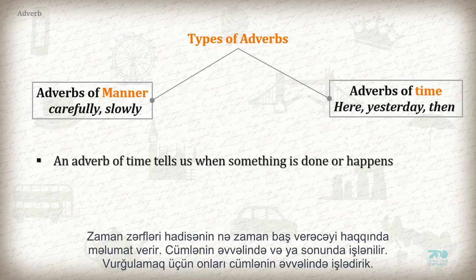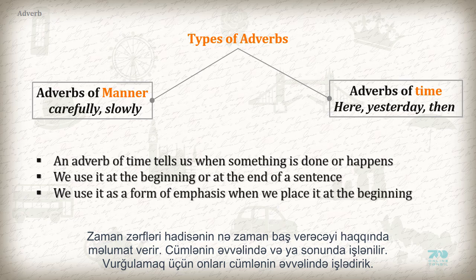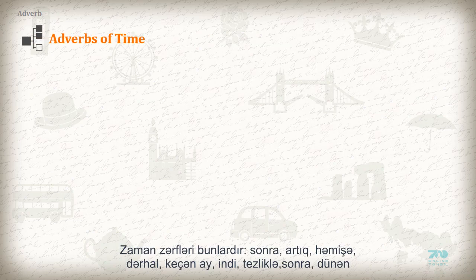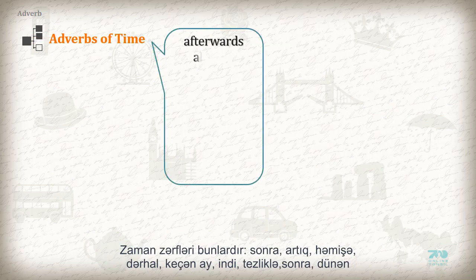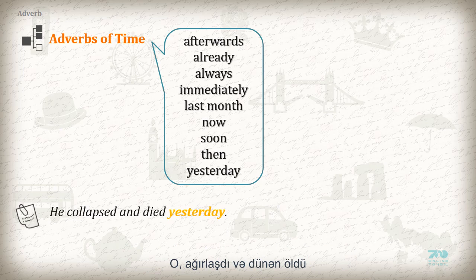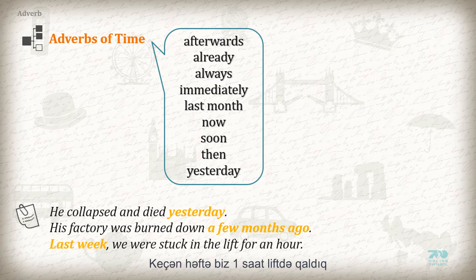An adverb of time tells us when something is done or happens. We use it at the beginning or at the end of a sentence. When placed at the beginning, it serves as a form of emphasis. Adverbs of time include: afterwards, already, always, immediately, last month, now, soon, then, and yesterday. For example: 'He collapsed and died yesterday.' 'His factory was burnt down a few months ago.' 'Last week we were stuck in the lift for an hour.'